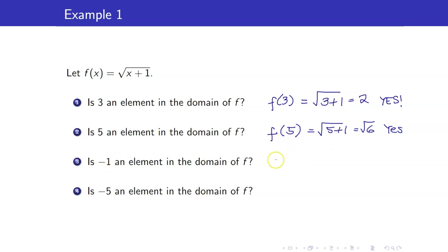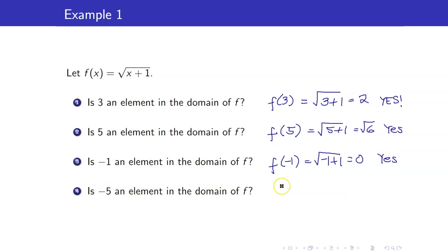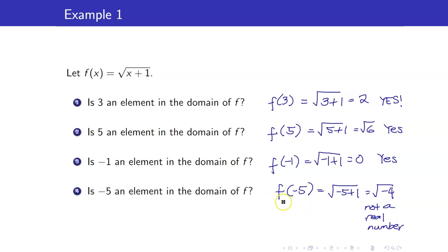What about negative 1? f of negative 1 is square root of negative 1 plus 1, which is equal to 0, hence it is a real number. The answer is yes. Is negative 5 an element in the domain of f? f of negative 5 is square root of negative 5 plus 1, which is square root of negative 4. This is not a real number, so the answer here is no.